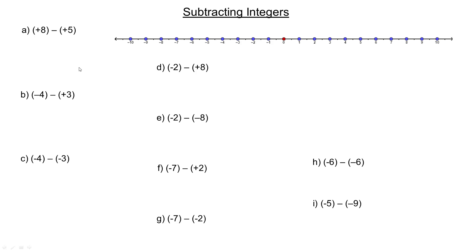In the first example, we have positive 8 and we're going to subtract 5. We illustrate positive 8 by going 8 spaces to the right. To subtract 5, taking 5 away means we would go 5 back in the negative direction, ending up at positive 3. So we go 8 to the right, subtract positive 5 by going 5 back, and end up at positive 3.